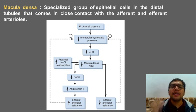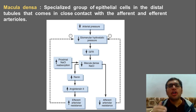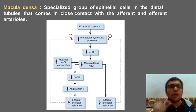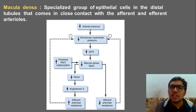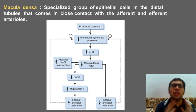The second case is increased arterial pressure. GFR will increase, more concentration of NaCl will reach the macula densa, and this will lead to secretion of a very important substance — adenosine. Adenosine leads to vasoconstriction, and obviously the GFR will then fall.